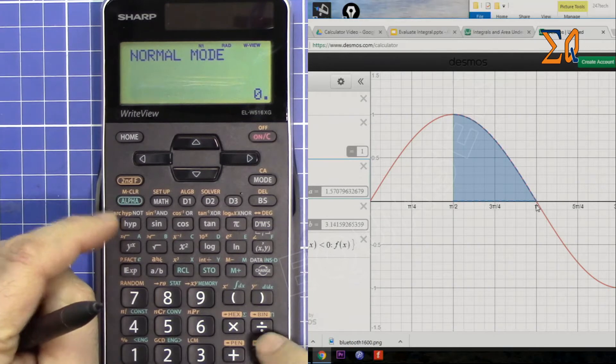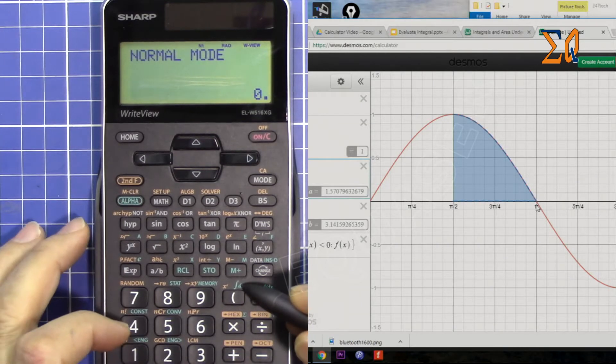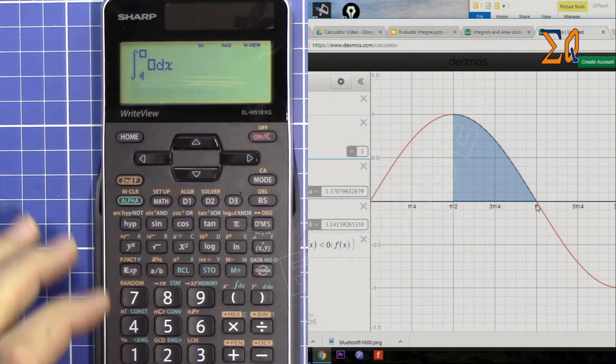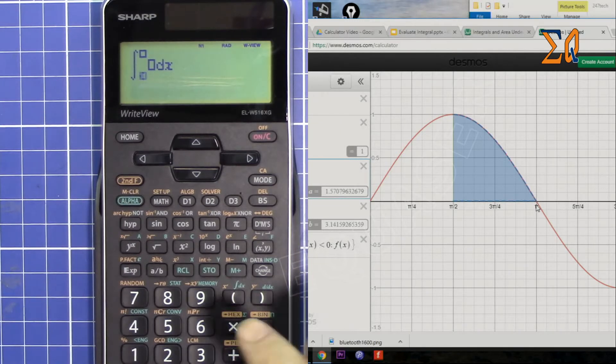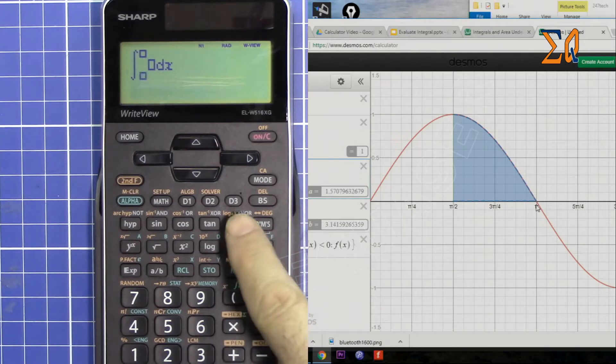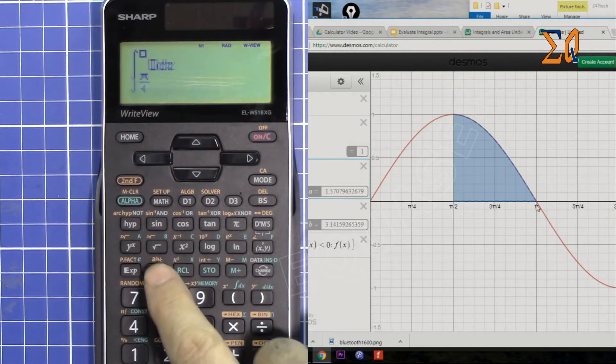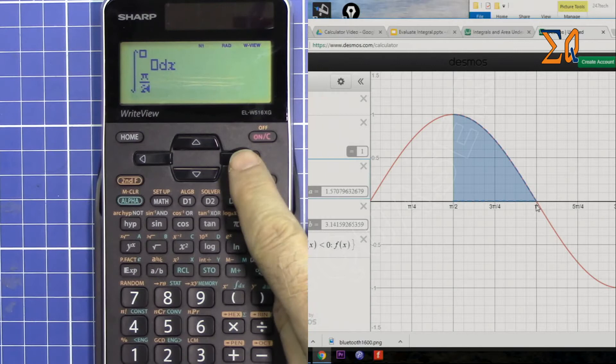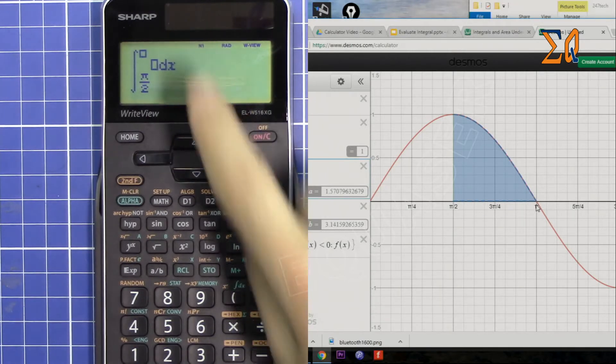For the integral, press Alpha and then Integral. The lower bound is π/2, so press π and then over 2. With the arrow, go to the right one more time at the top.